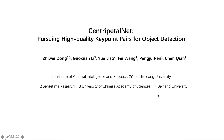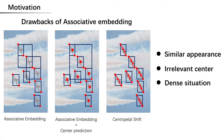CentripetalNet is a corner-based detector with two key designs: centripetal shift and cross-star deformable convolution. Our model predicts geometric centripetal shift to construct the relationship between paired corners through their shared center. This can avoid the drawbacks of associative embedding.